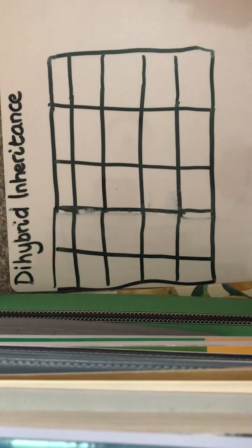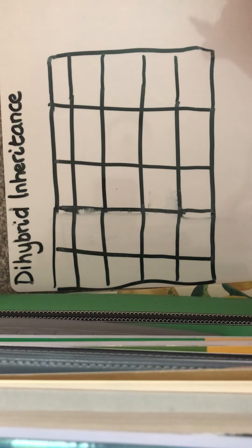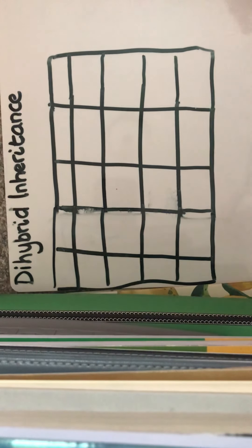Hello and welcome to the video looking at dihybrid inheritance. When we're talking about dihybrid inheritance we're talking about the simultaneous inheritance of two different characteristics. And what we're going to be looking at here is the example that Mendel used when he was examining the inheritance of seed shape and seed colour in pea plants.